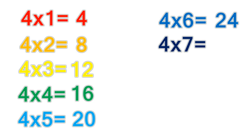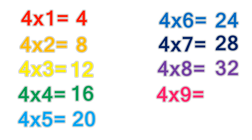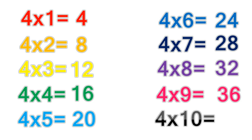4 times 6 equals 24. 4 times 7 equals 28. 4 times 8 equals 32. 4 times 9 equals 36. 4 times 10 equals 40.